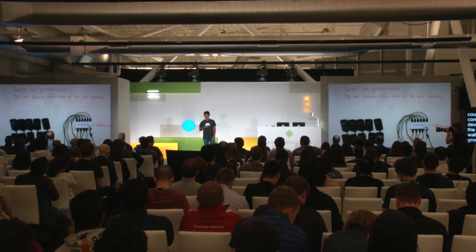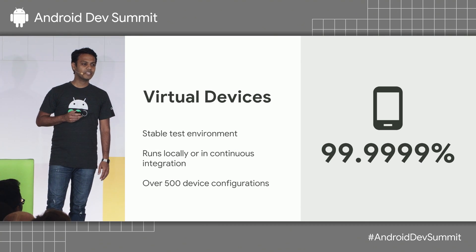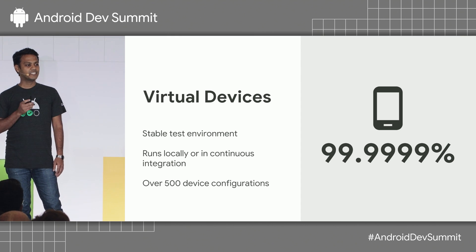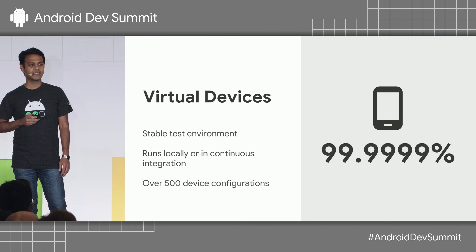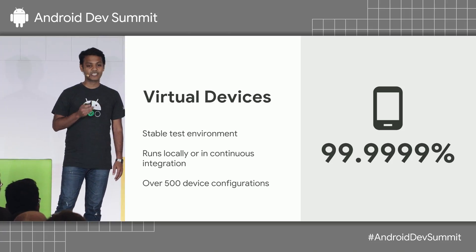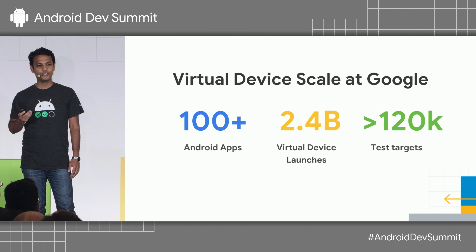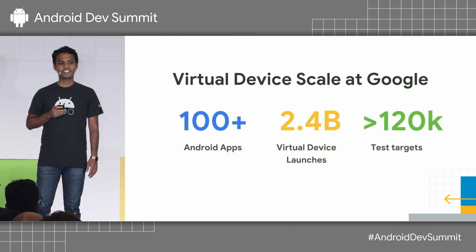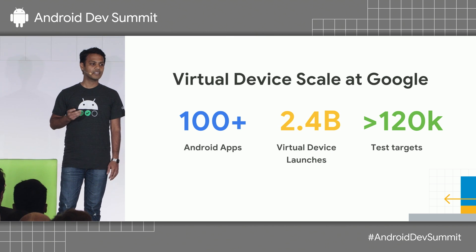I want to give a huge shout-out to the Firebase Test Lab team that makes testing on Firebase Test Lab so much easier. At Google, we solve this by using the virtual device infrastructure. The test environment we use is extremely stable — 99.9999% stability ratio. The virtual device infrastructure has the ability to run locally or in a CI environment and supports over 500 different device configurations. It's used by over 100 first-party apps such as Google Photos, Search, and YouTube. Just in 2018, it had a staggering 2.4 billion invocations, and there are over 120,000 targets that use this infrastructure.